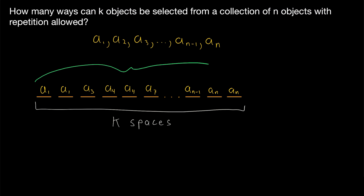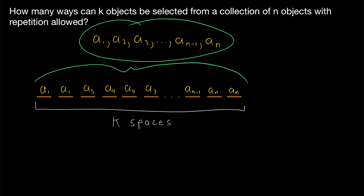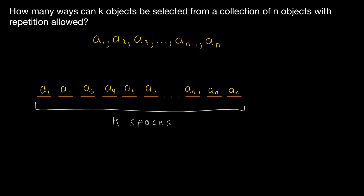Perhaps this seems daunting — how could we possibly count the number of ways to fill in these k spaces with selections of these n objects, especially because repetition is allowed? We might wonder: is there another way I could completely communicate the combination of objects that I selected without literally writing out every single one? Here's an idea.